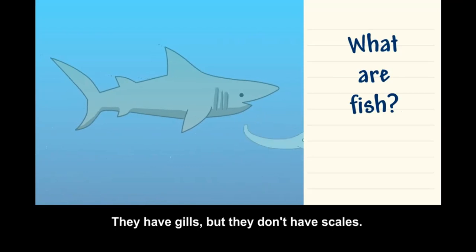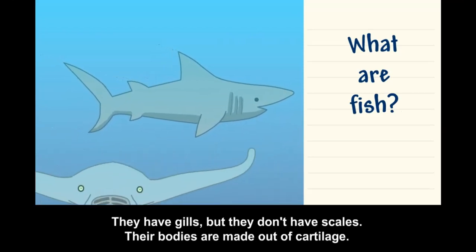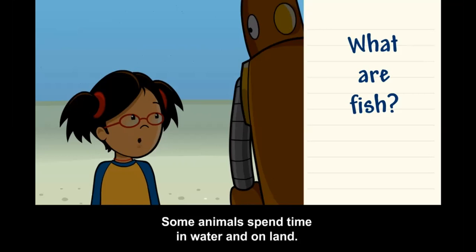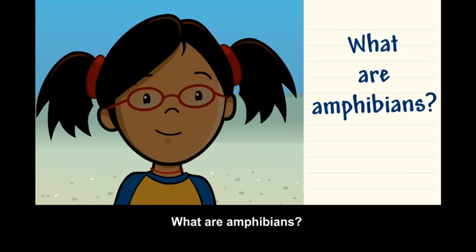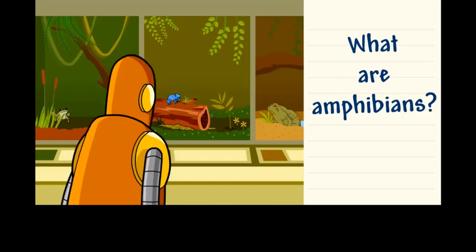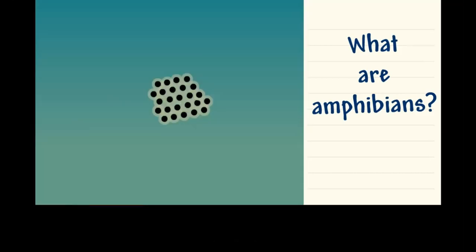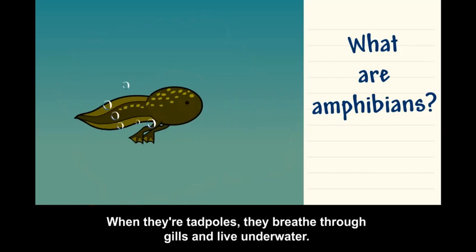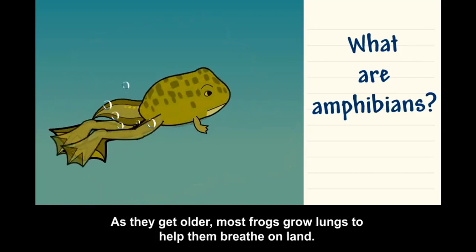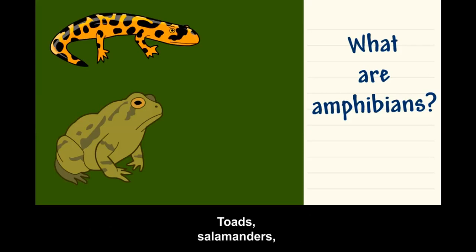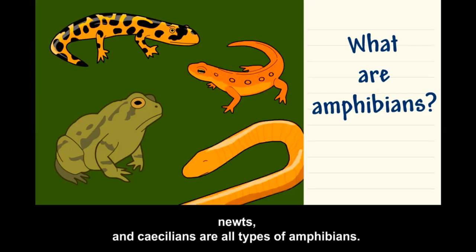Some animals spend time in water and on land — what are amphibians? Amphibians are animals that have adapted to live on both water and land. Frogs are amphibians: they hatch from tiny soft eggs in water; when they're tadpoles, they breathe through gills and live underwater. As they get older, most frogs grow lungs to breathe on land. Many amphibians can also breathe underwater through their skin. Toads, salamanders, newts, and caecilians are all types of amphibians.